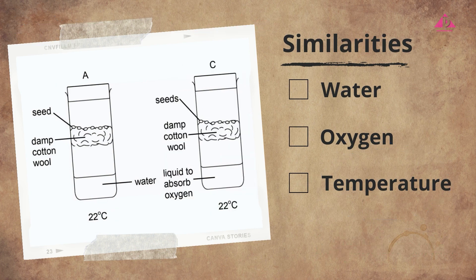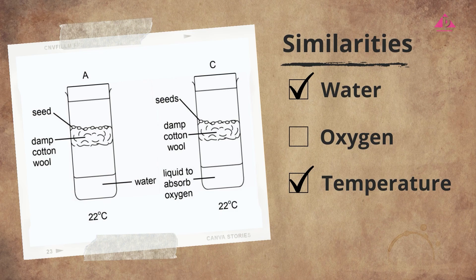Next, we are going to compare setup A and C. The temperature is the same in both setups. Also, there is damp cotton wool beneath the seeds in both setups, so both temperature and water are control variables. Setup A contains water, while setup C contains an oxygen-absorbing chemical. So the seeds in A are in an aerobic environment, while the seeds in C are in an anaerobic environment.